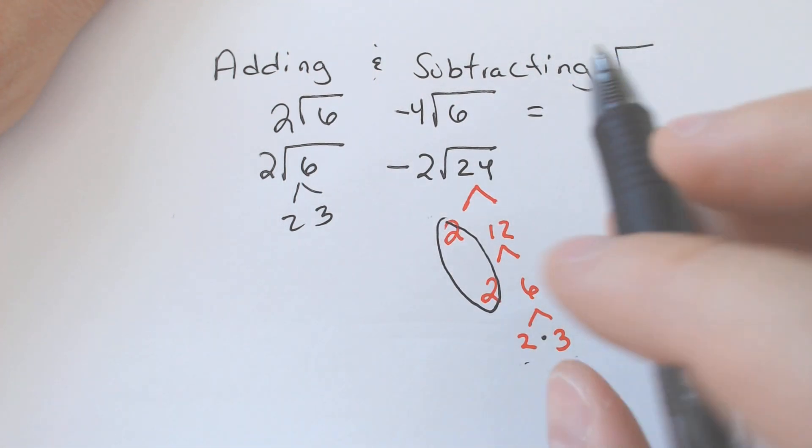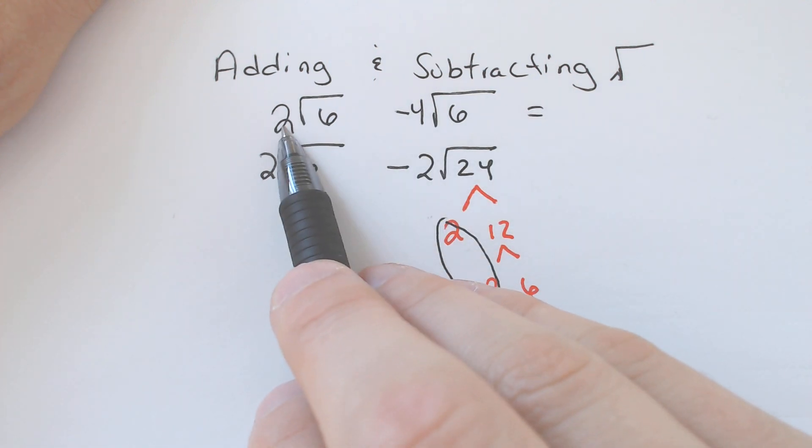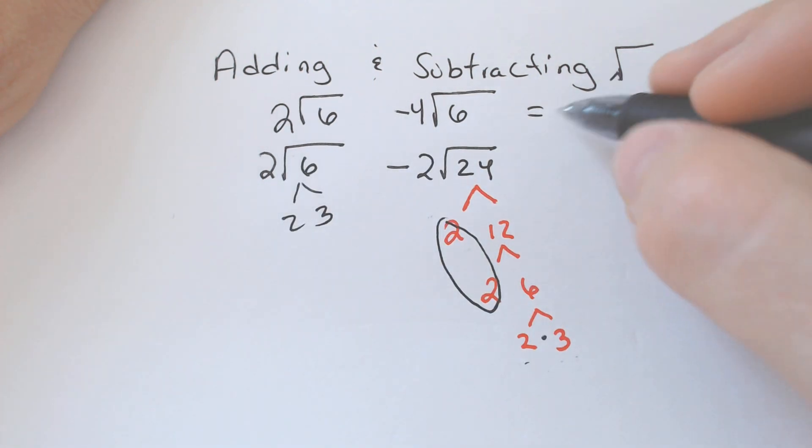If you subtract those, you're only going to be adding or subtracting the outside numbers. So whatever 2 minus 4 is, which is negative 2, square root of 6 would be our answer.